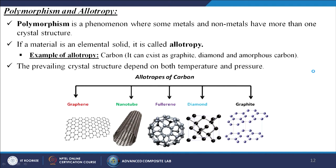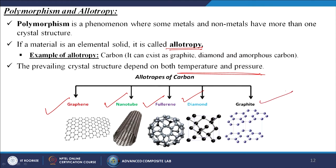Polymorphism is a phenomenon where some metals and non-metals have more than one crystal structure. When a material is an elemental solid, this is called allotropy. The best example is carbon, which can exist as graphite, diamond, or amorphous carbon. The prevailing crystal structure depends on both temperature and pressure. Allotropes of carbon include graphene, nanotubes, fullerene, diamond, and graphite.